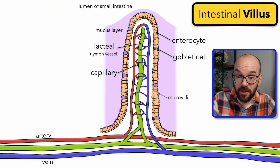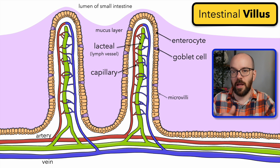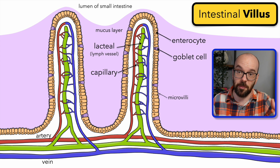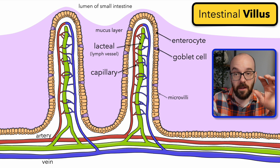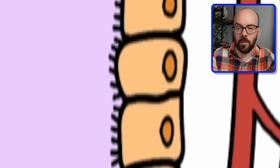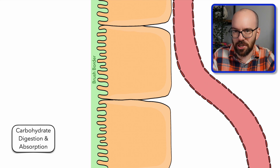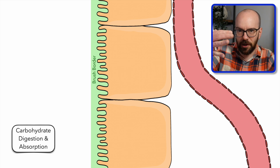Of course we don't just have one villus — there are millions of villi all over the folds in the lining of our small intestine where all the absorbing of nutrients occurs. Now let's zoom way in on the enterocytes and capillaries to look at how digestion and absorption occurs. The microvilli extend out of the enterocytes and form what we call the brush border, just like little hairs on a brush.